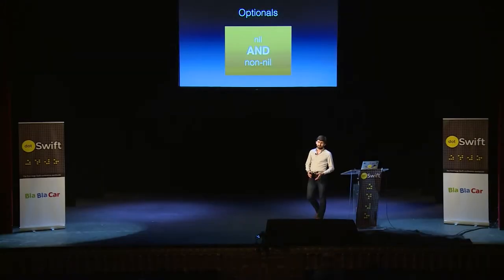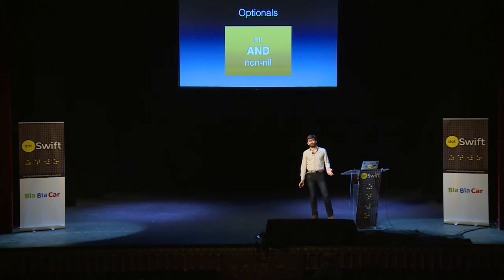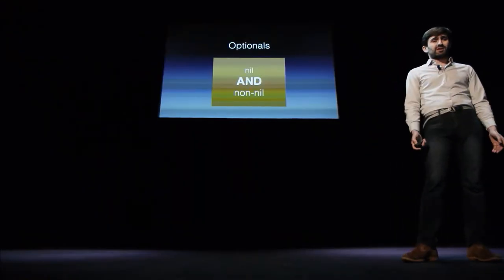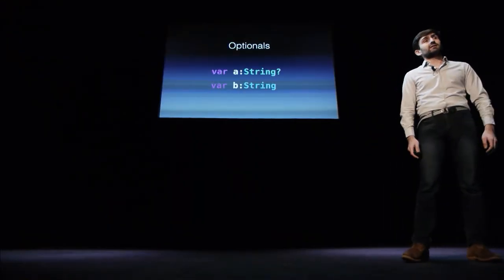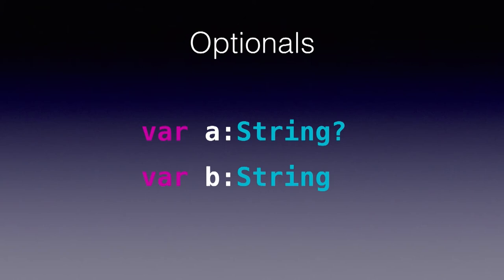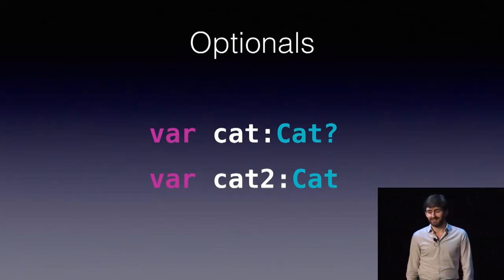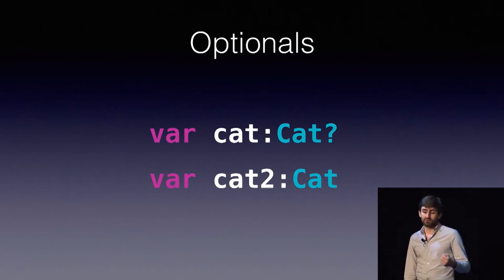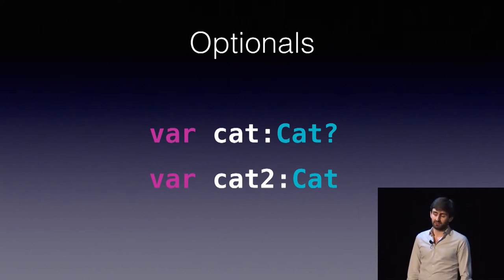An optional is a wrapper around a value. You can see what's inside, and you know it's either nil or non-nil, but until runtime you don't know. So you have to handle both cases. Here we have A, an optional string, and B is just a regular string. You can turn a string into an optional string just by adding a question mark at the end. You can make an optional of anything — optional date, optional UIButton, optional whatever. A cat can either have a value or be nil, whereas cat2 is a real cat with an actual value.